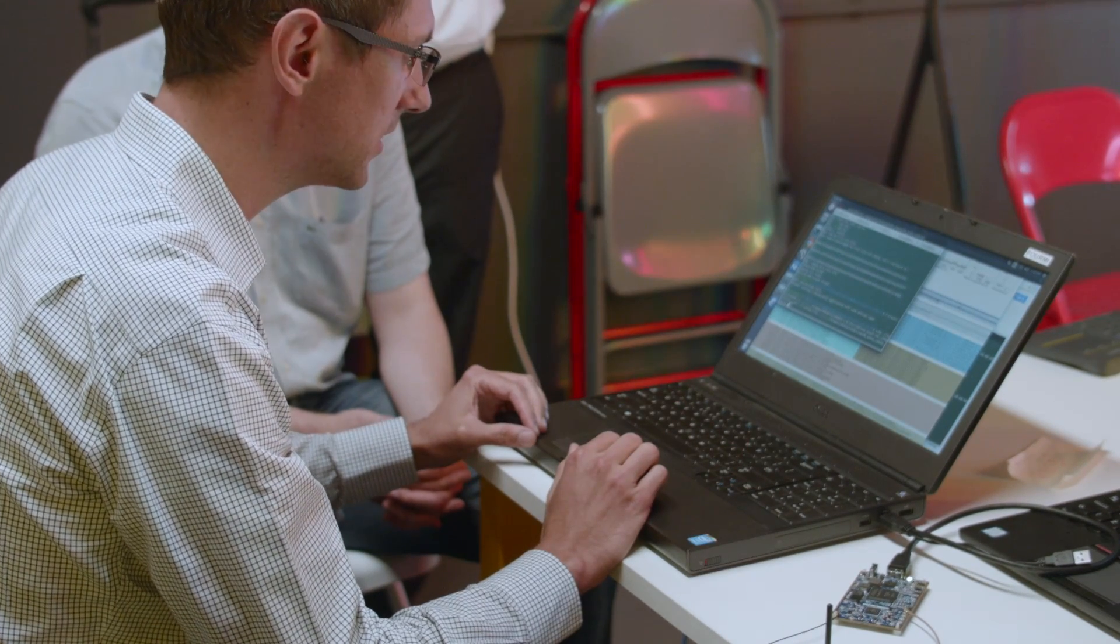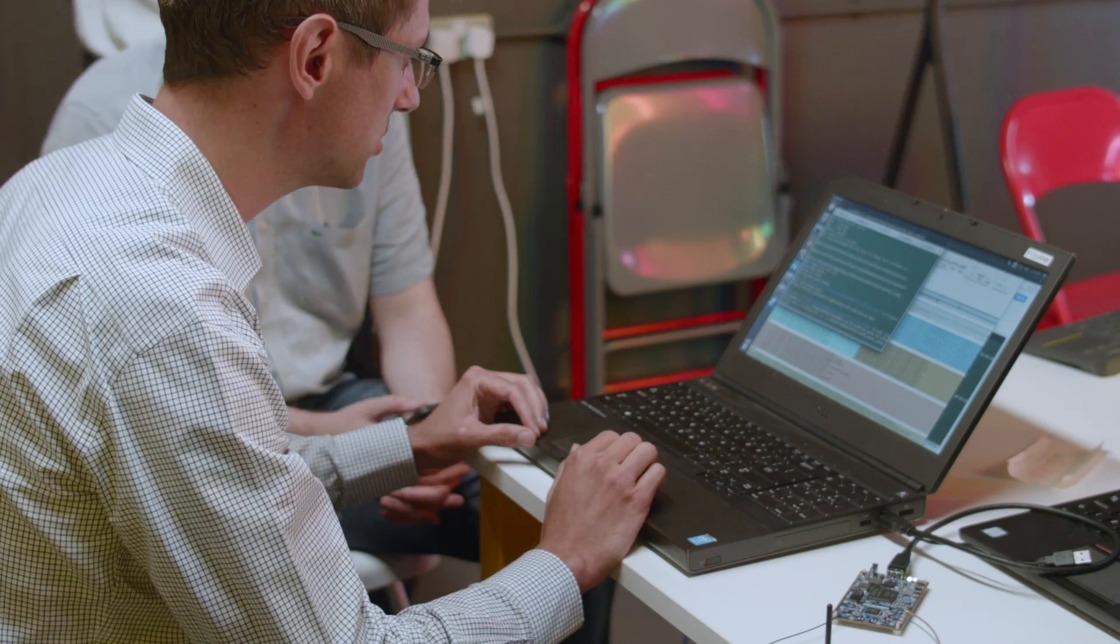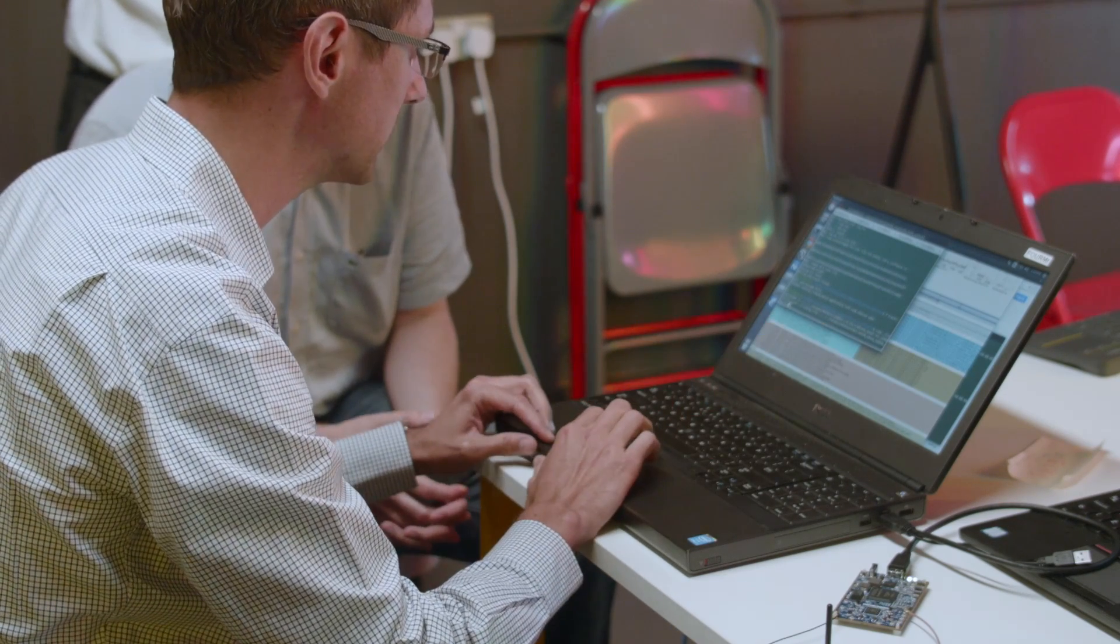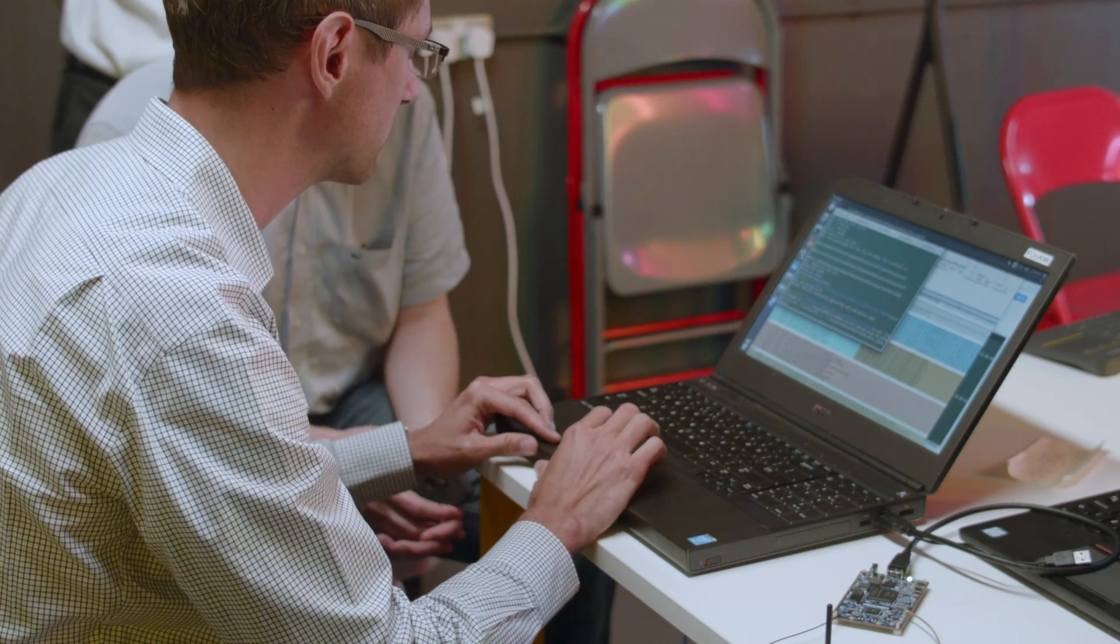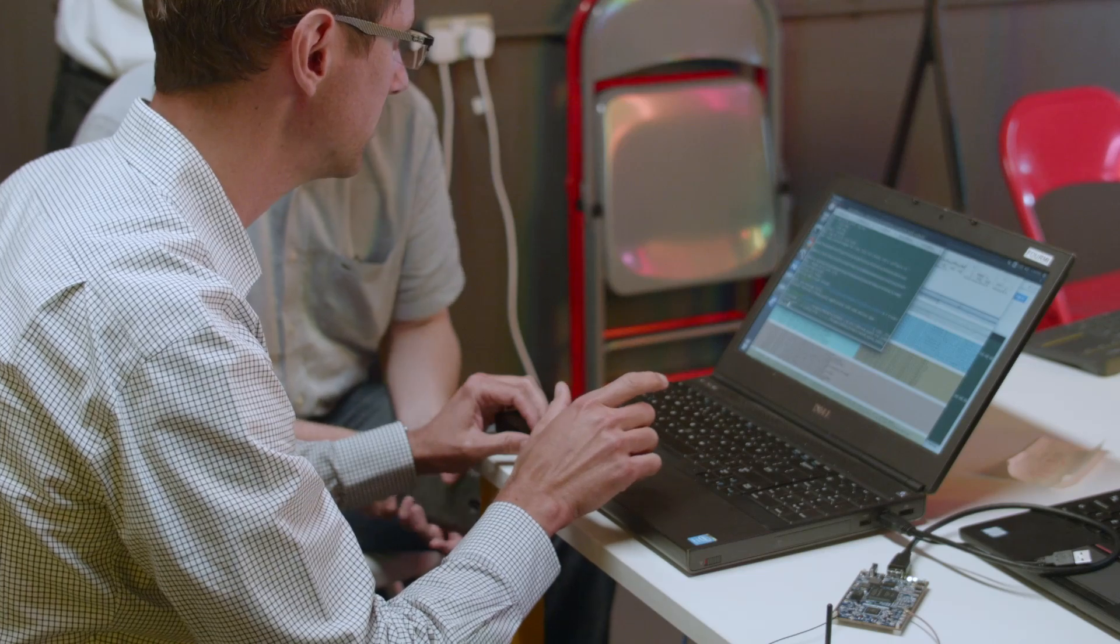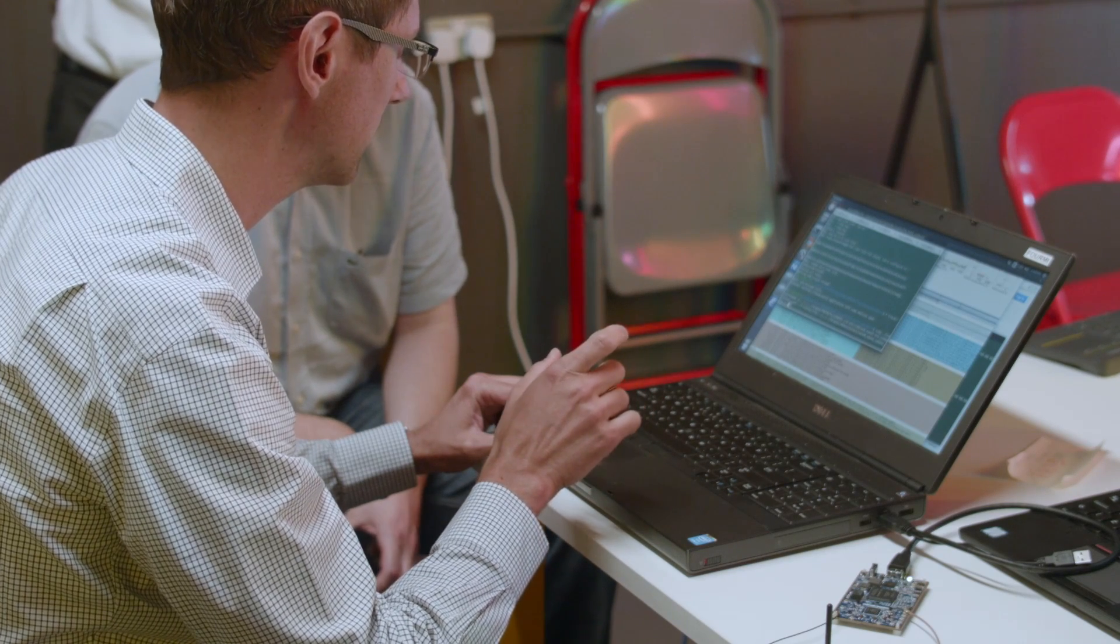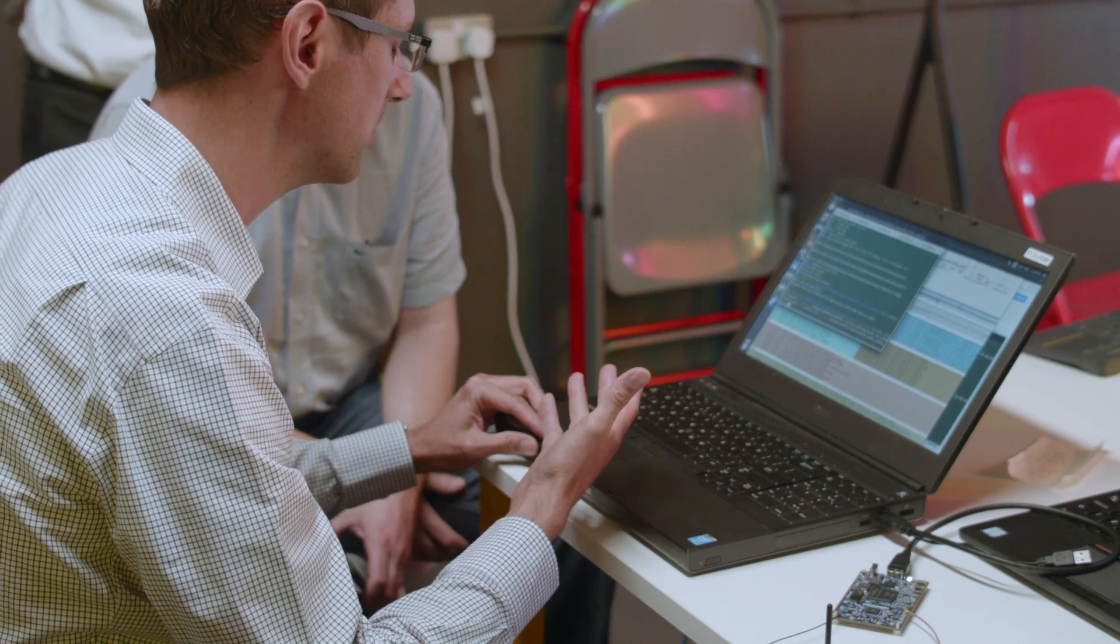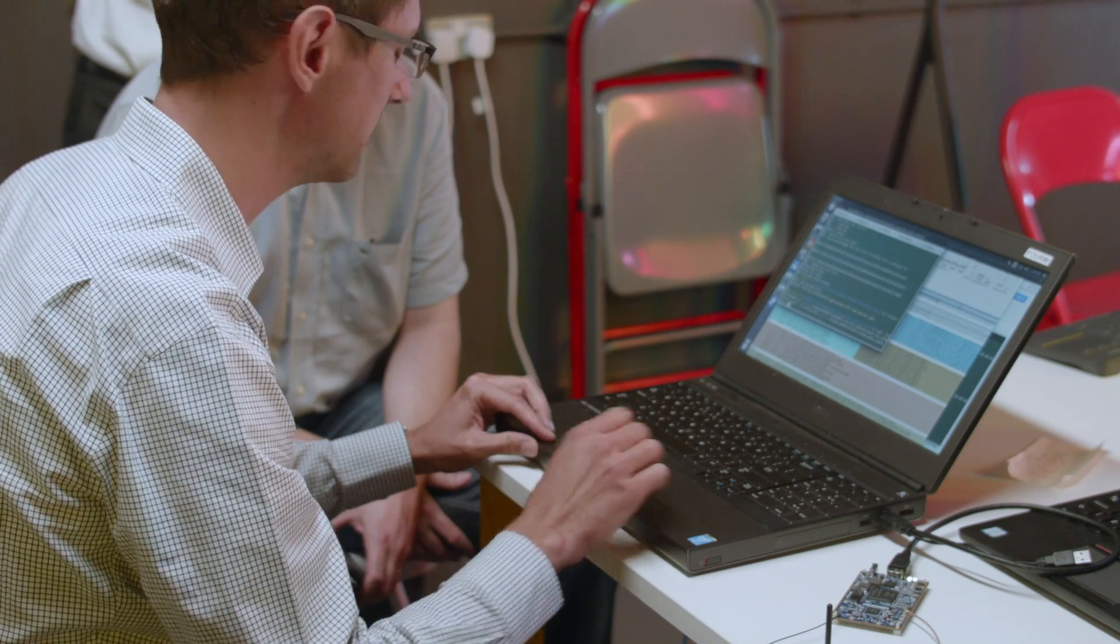The only thing I need to do is start the base station with the right configuration file. In this configuration, I'm configuring it for Band 7, transmission mode 1. I'm using a 5 MHz configuration, 25 resource blocks. That will give me an approximate throughput of 10-11 Mbps.